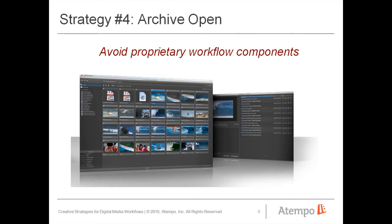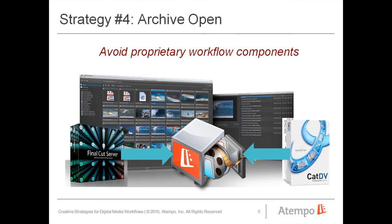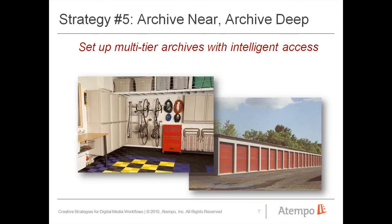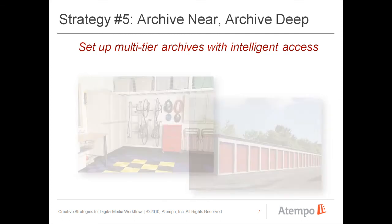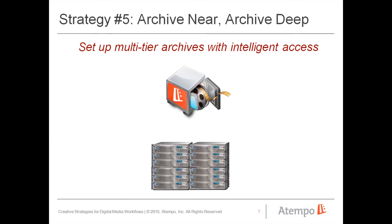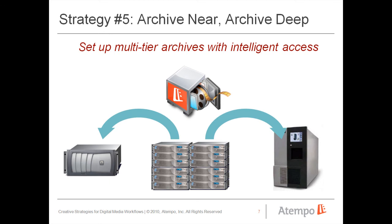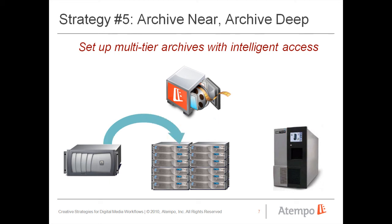The industry is moving to open archives that are directly integrated with solutions like Final Cut Server and CatDV. Strategy five: archive near, archive deep — set up multi-tier archives with intelligent access. Since not all content needs to be readily available, your archive should support both a disk-based nearline for quick access and a tape-based deep archive. Your archive should be smart enough to automatically retrieve from the nearline until the content is aged out and only available on the deep archive.